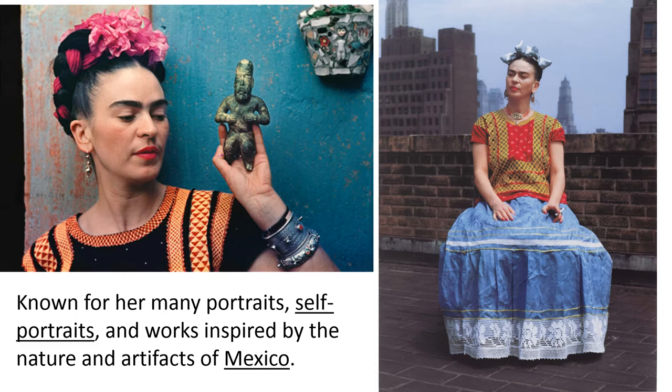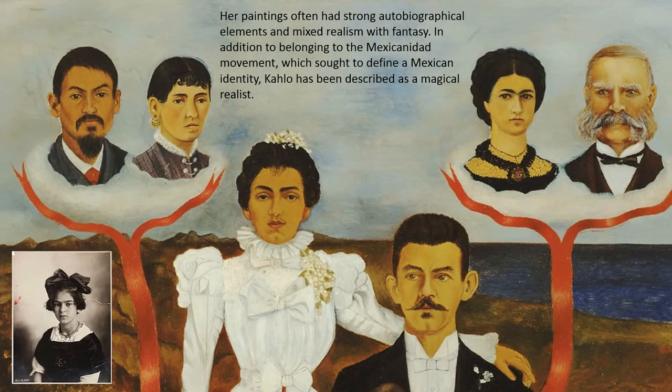You can see she's holding a sculpture from Mexico's ancient history, and her style of dress was meant to reflect the traditional clothing of Mexico at that time. Her paintings also had a strong autobiographical side to them, meaning they told stories about her life, and she mixed realism with fantasy. She was part of a movement called Mexicanidad, which sought to define Mexican identity and revive the ancient history of Mexico, and because of this she is often described as a magical realist.